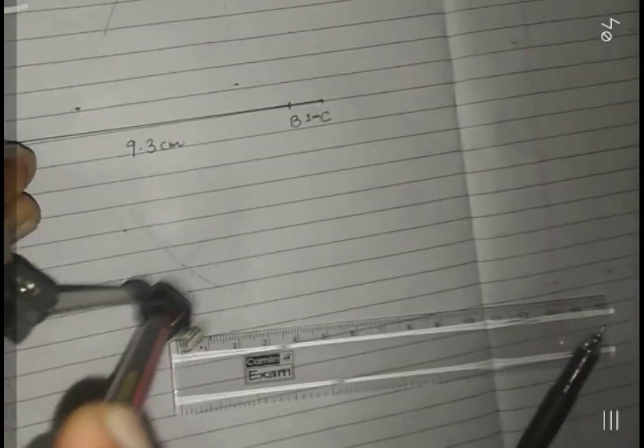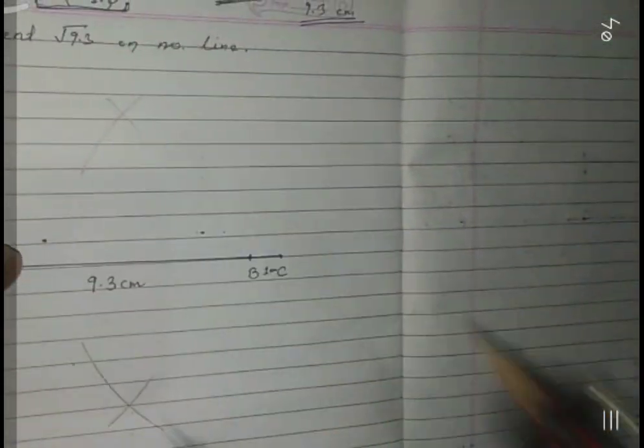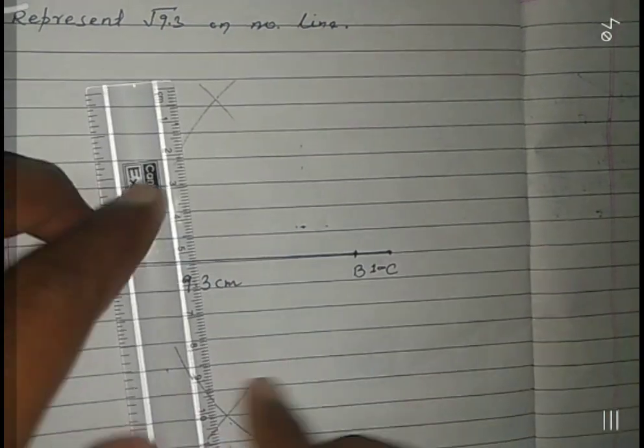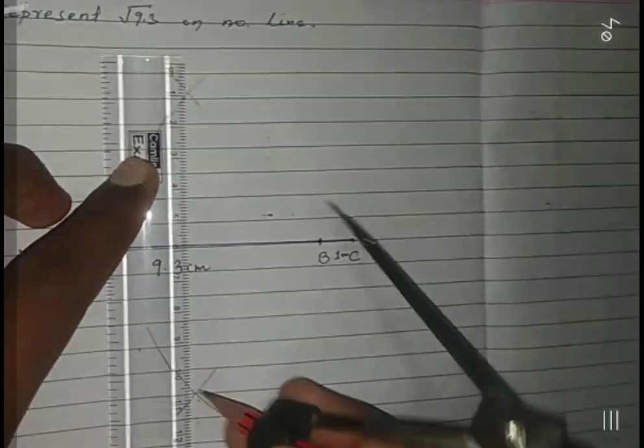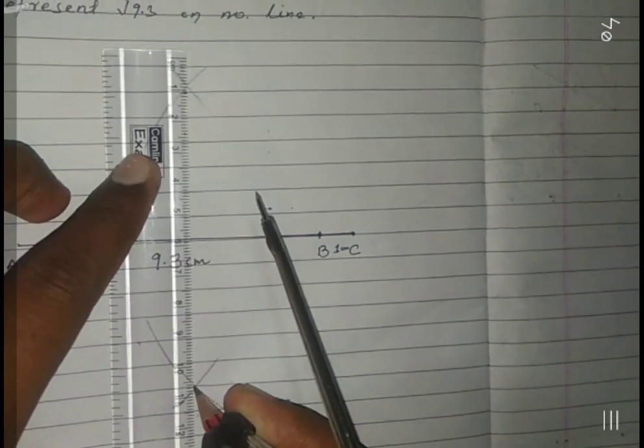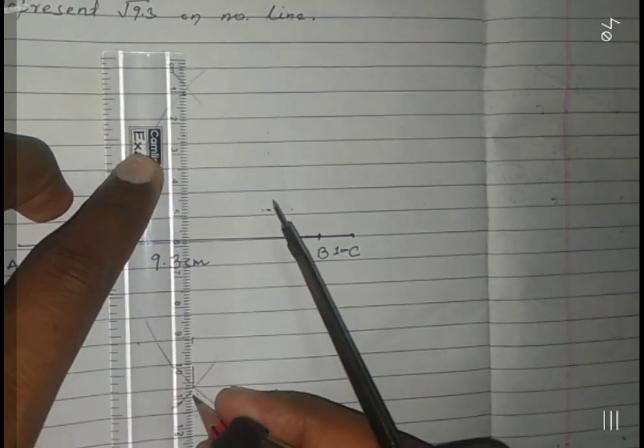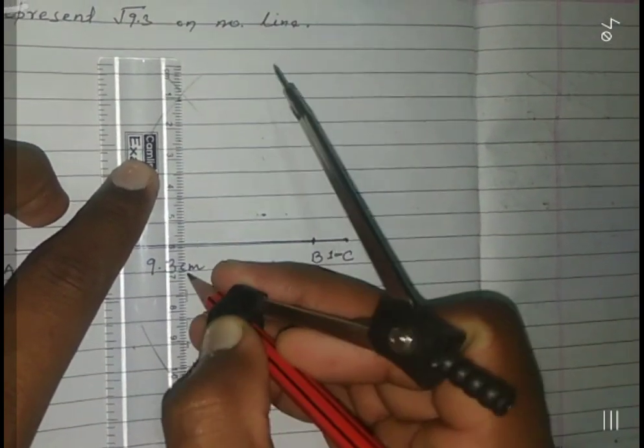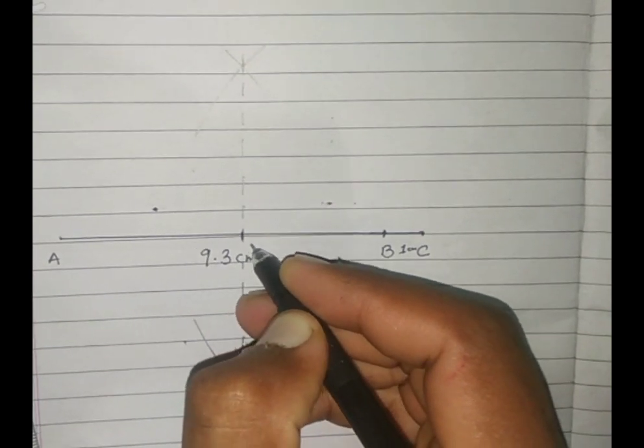Now I am bisecting this by dotted line and mark this point as O.